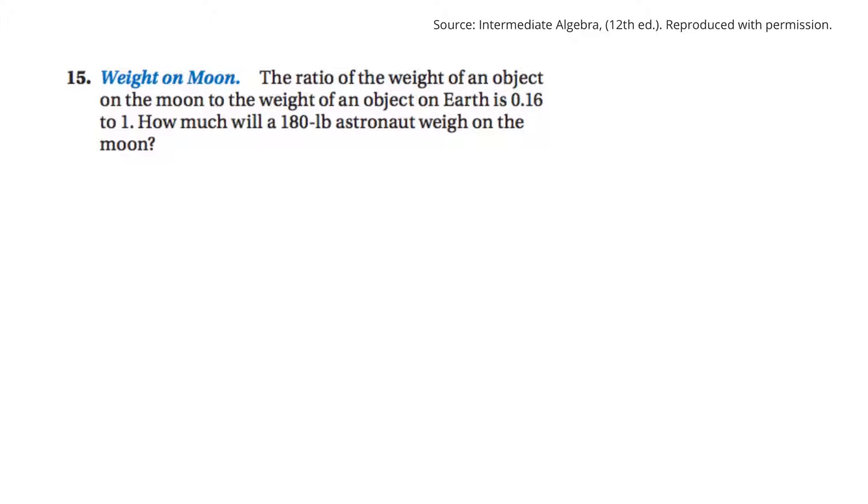The ratio of weight of an object on the moon to the weight on Earth is 0.16 to 1. So this would be moon, and this would be Earth. So then they say, how much will a 180-pound astronaut weigh on the moon? So on Earth, he weighs 180 pounds, and I wouldn't know what that would be.